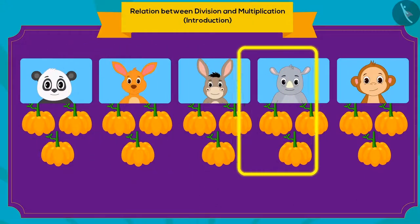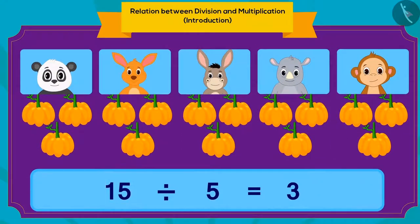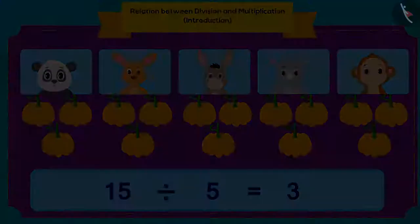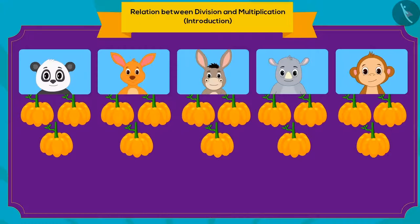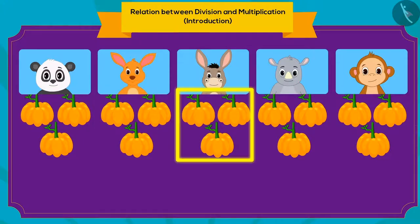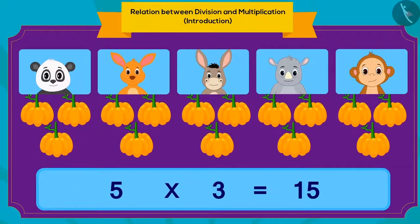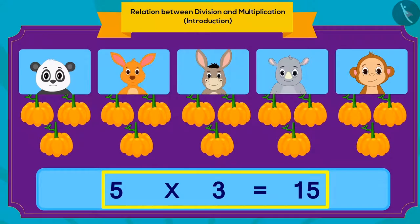How can we write this using division? When you divide 15 pumpkins equally into five parts, you get three pumpkins in each part. We have five friends and each friend gets three pumpkins. We can also write this using multiplication: five multiplied by three is 15 pumpkins.